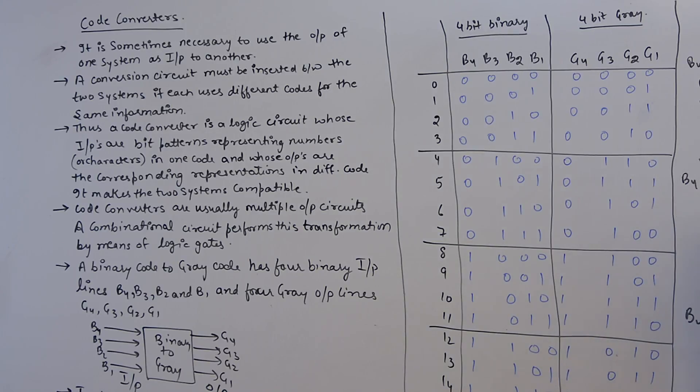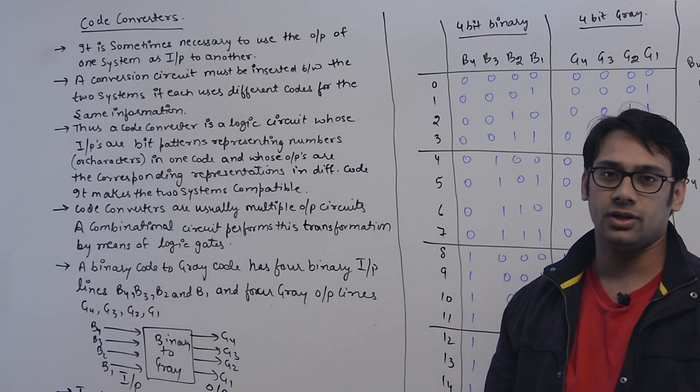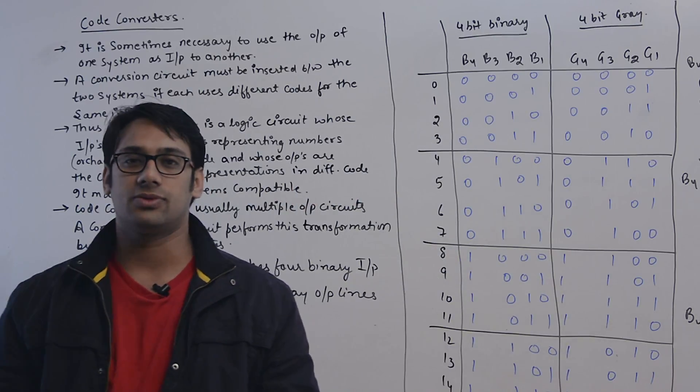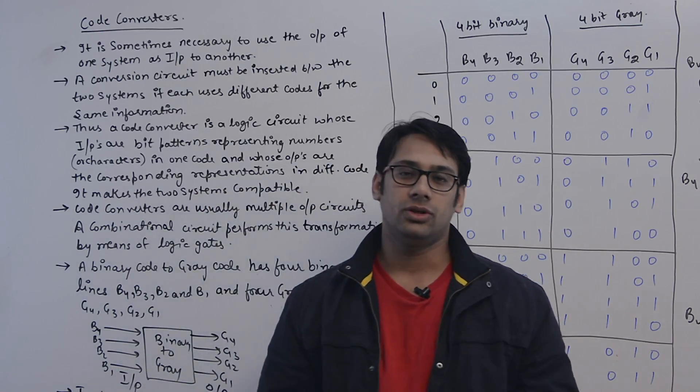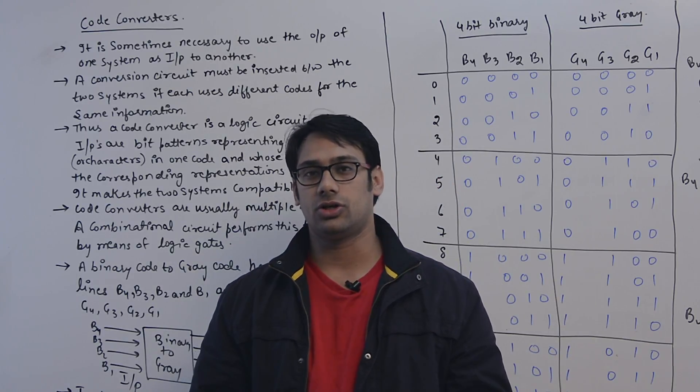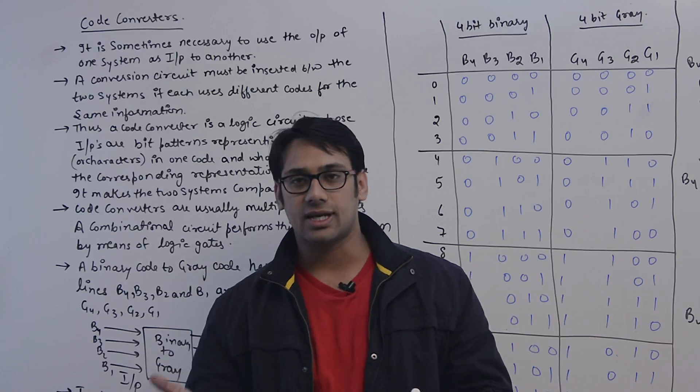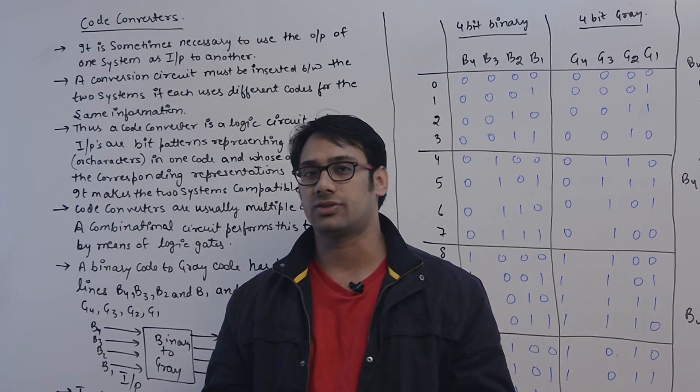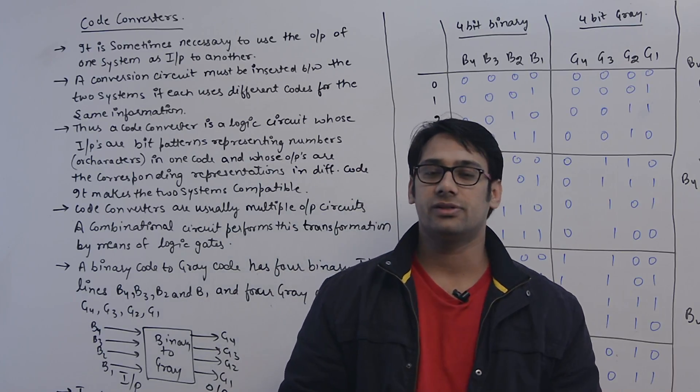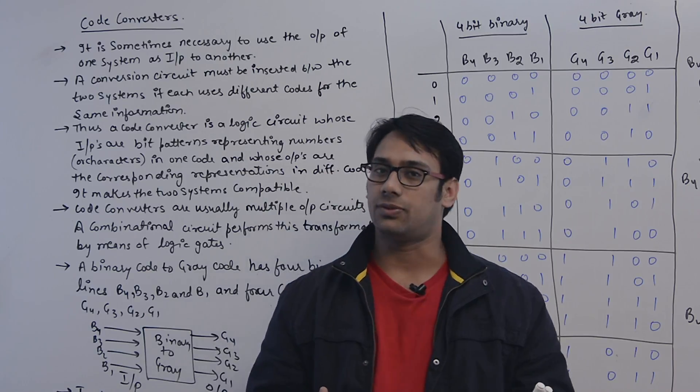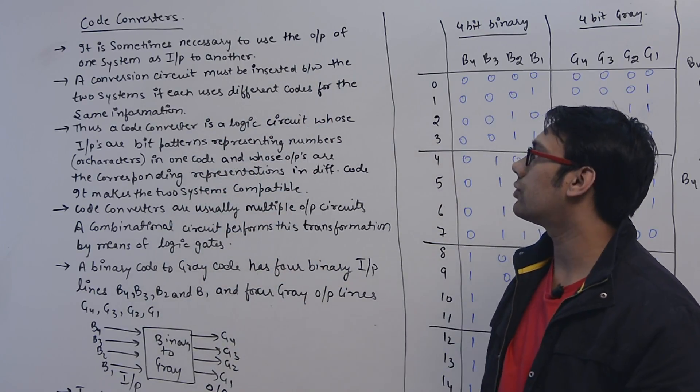So here I am explaining a code converter for a simple code converter that is going to convert a binary code to the gray code. So what is a code converter? It is sometimes necessary to use the output of one system as an input to another system. For example, some systems may be using ASCII code, which is a one byte code, and some systems may be using EBCDIC code or unicode, which is a two byte code.